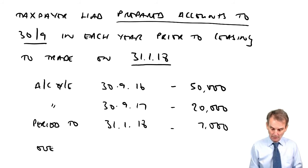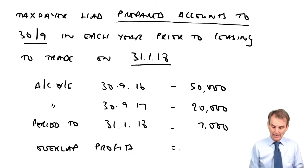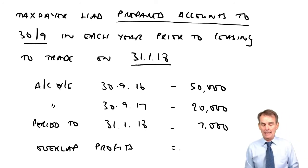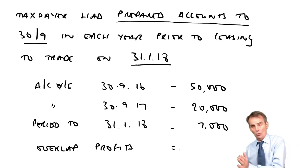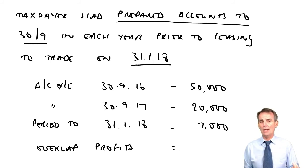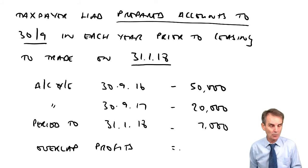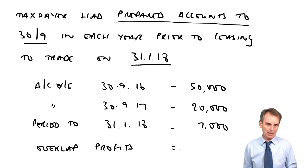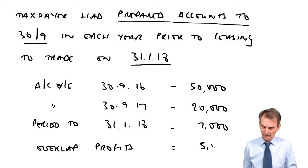We also need to know the overlap profits that arose in the opening years. You may be given a relatively short business where you're told the start date and all the accounting periods through to cessation, requiring you to use opening year basis rules to determine the overlap profit, which is then credited back on cessation. In this example those overlap profits amounted to £5,000.